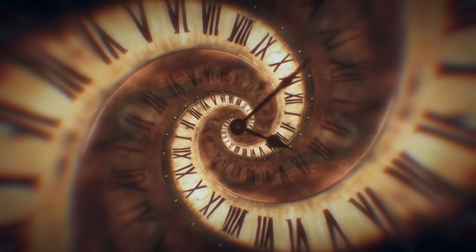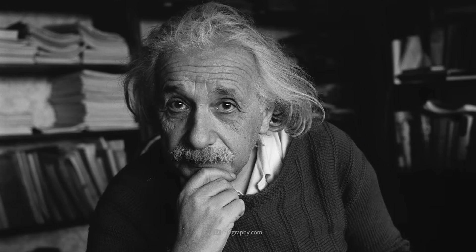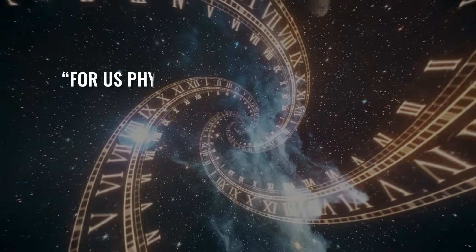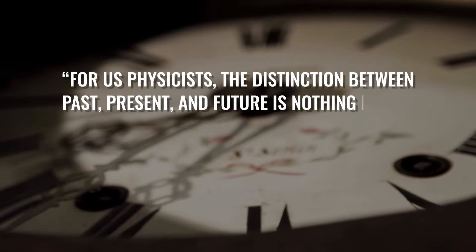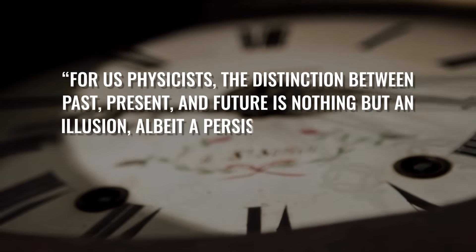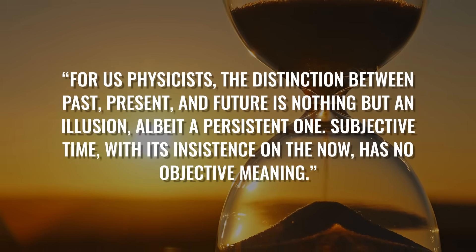Let's start with a simple yet profound question. What is time anyway? Well, a certain Albert Einstein once approached this complex topic as follows. For us physicists, the distinction between past, present, and future is nothing but an illusion, albeit a persistent one. Subjective time, with its insistence on the now, has no objective meaning.